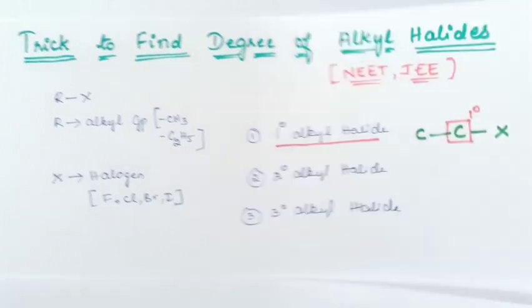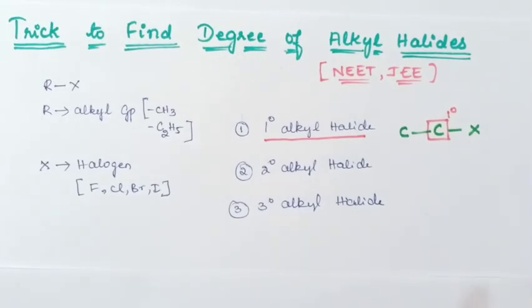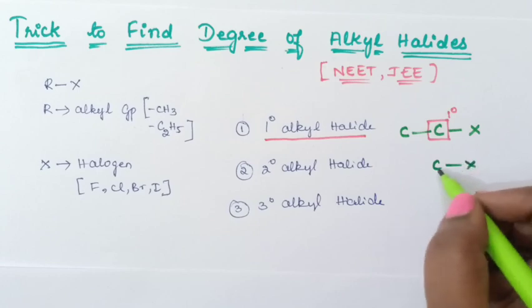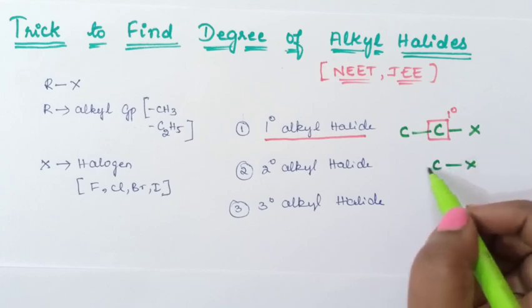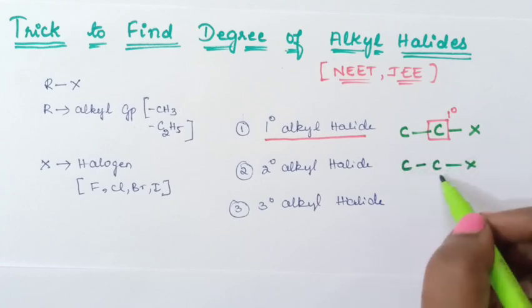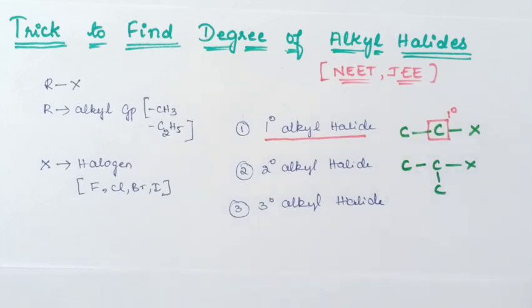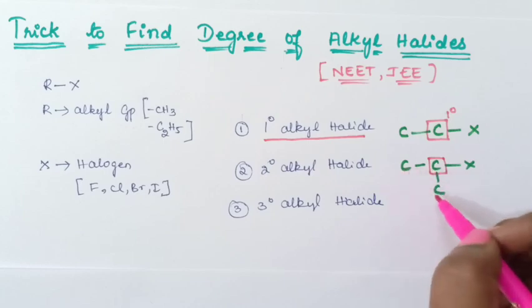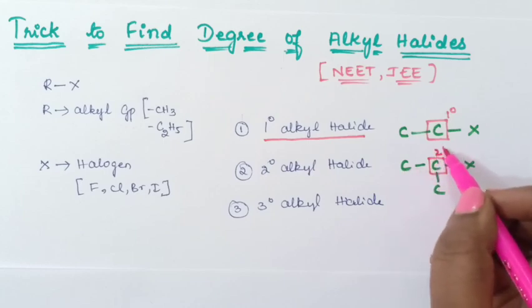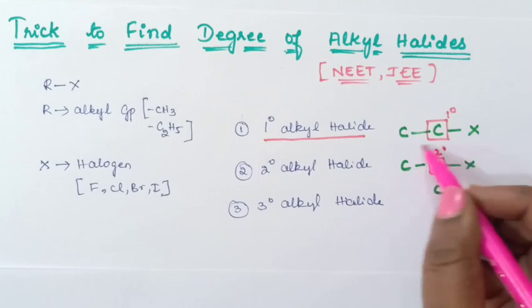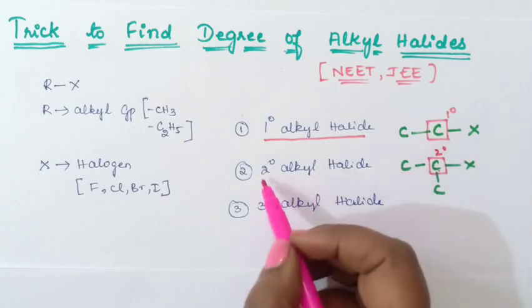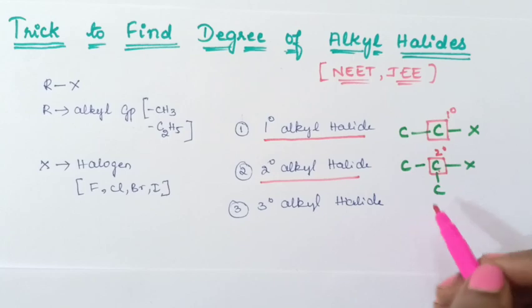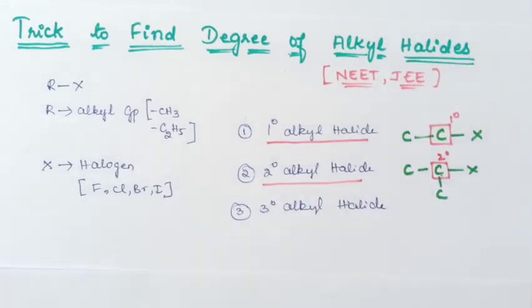Now we will see what is secondary alkyl halide. Here, the halogen is connected to a carbon, and this carbon should be connected to two other carbon atoms. So this carbon is a secondary carbon, and this whole structure is known as secondary alkyl halide because the halogen is connected to a secondary carbon.